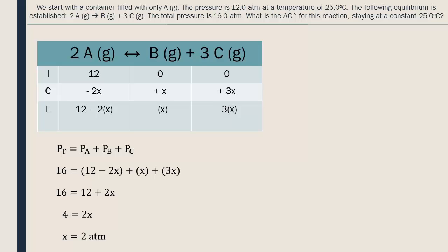We insert the value of X to determine the partial pressures at equilibrium. Now we can calculate the equilibrium constant of the reaction, and then from there the value of delta G.